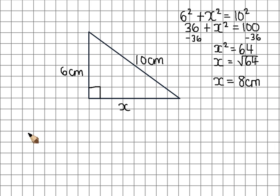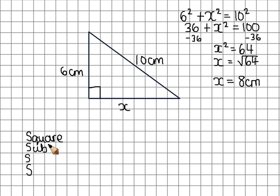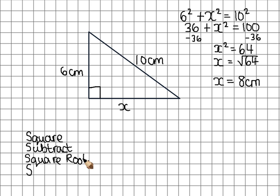An alternative method is to use the acronym SSSS: we're going to square, subtract, and square root to find a short side.